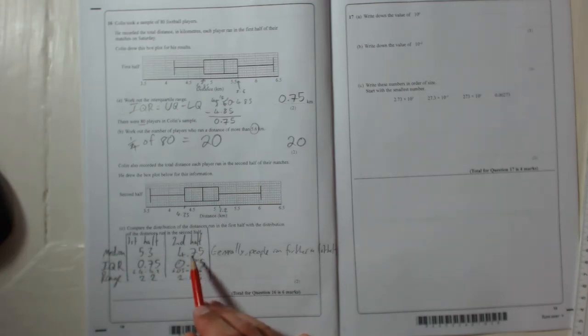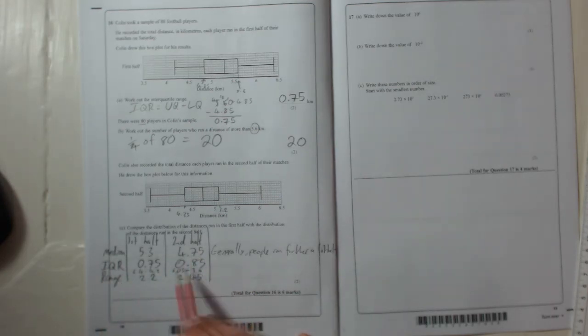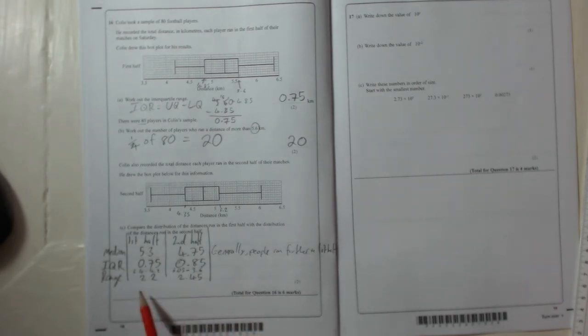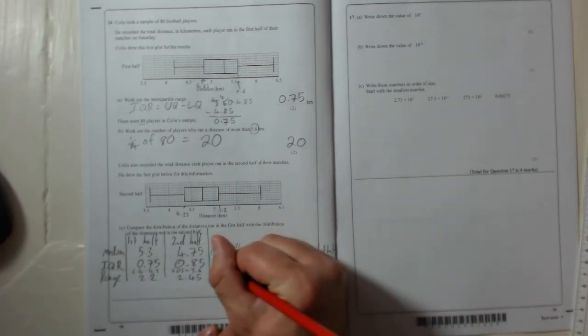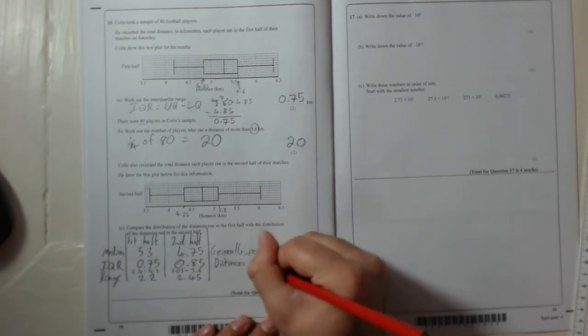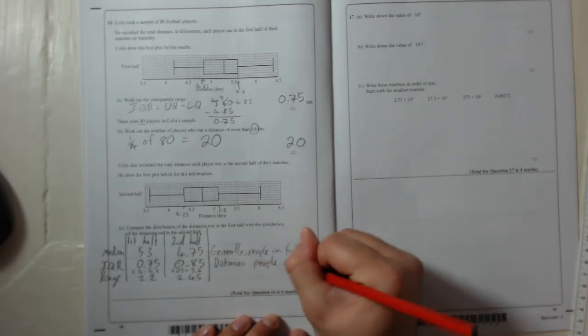So interquartile range is bigger in the second half, so that means that it's more spread out. You can see that from the range as well. Okay, so you can say that the distances people ran were more varied.